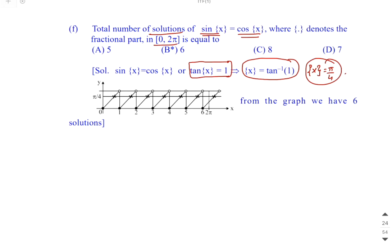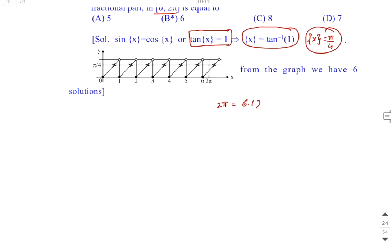We know the graph of fractional part x runs from 0 to 1. Now, 2pi is approximately 6 point something. The graph goes from 0 to 1 repeatedly. So we count: 0, 1, 2, 3, 4, 5, 6. Here, the horizontal line at pi by 4 is drawn.